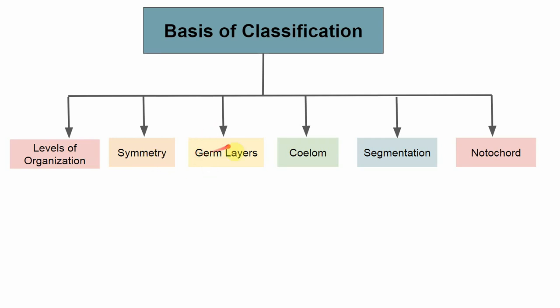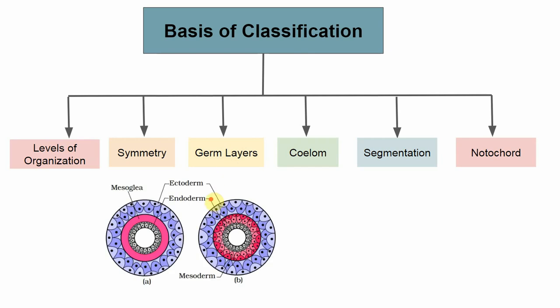The next basis is germ layers. The development of any organism may be from two germ layers or three germ layers. If from two germ layers, we call it diploblastic. If from three germ layers, we call it triploblastic. The three germ layers are ectoderm, endoderm, and mesoderm. In diploblastic organisms, only the ectoderm and endoderm are present.